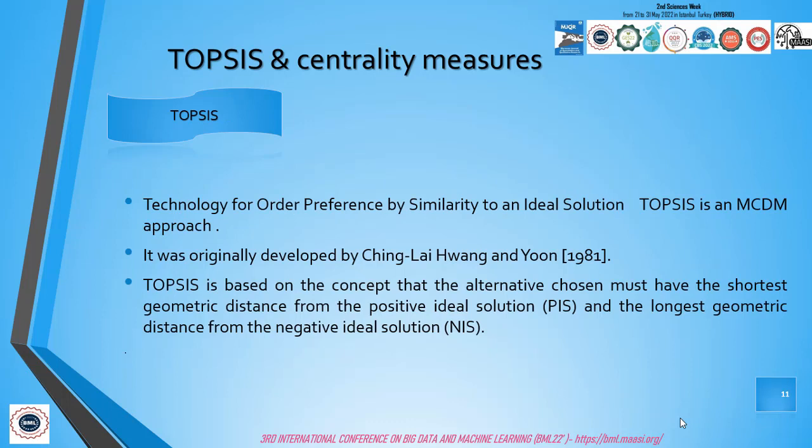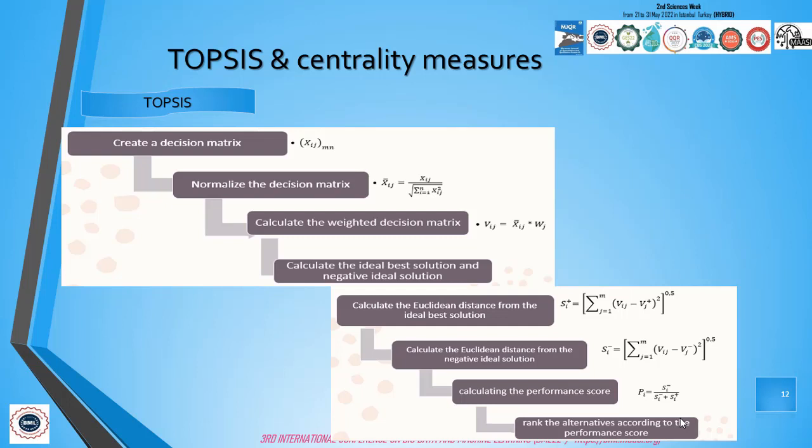We pass to TOPSIS and centrality measures. TOPSIS is the technique for order preference by similarity to ideal solution. It's a famous MCDM approach. It was originally developed by Shaili Wong and Yun in 1981. It's based on the concept that the alternative chosen must have the nearest distance from the ideal solution and the farthest distance from the negative ideal solution.